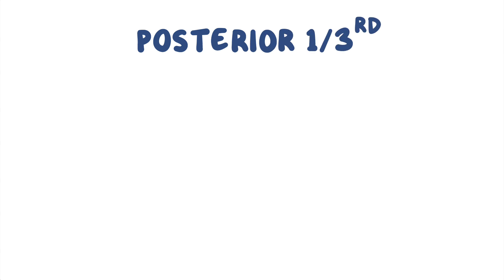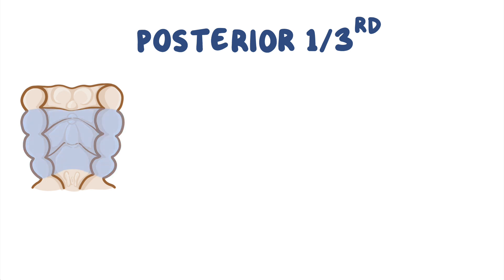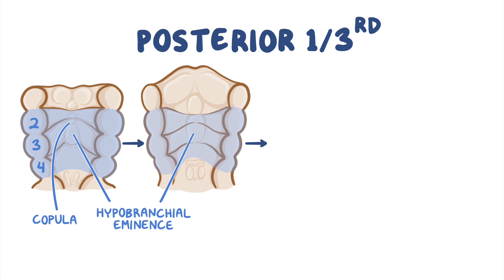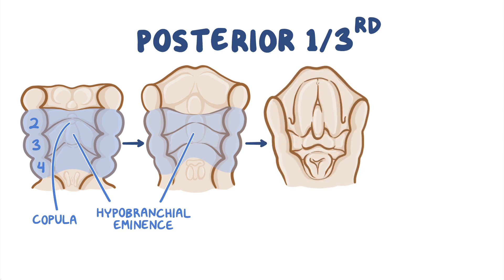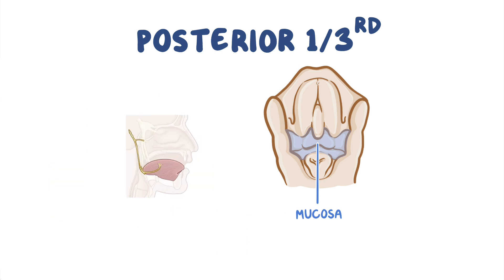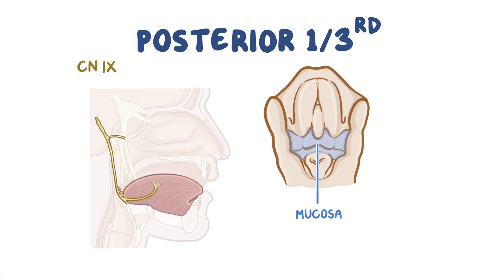Similarly, the posterior one-third of the tongue also begins to develop around week 4 as two mesodermal swellings. The first swelling, known as the copula, develops in the midline of the second and third pharyngeal arches during week 4. The second swelling, known as the hypobranchial eminence, grows from the midline of the third and fourth pharyngeal arches around week 5. In the following weeks, the hypobranchial eminence begins to grow upwards and along the way grows over the copula, eventually becoming the mucosa over the posterior one-third of the tongue, which fuses with the anterior portion forming the complete tongue. The mucosa overlying this area receives its sensory innervation from the ninth cranial nerve, the glossopharyngeal nerve.